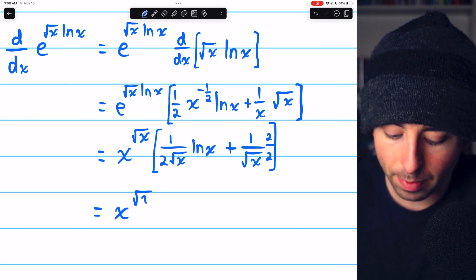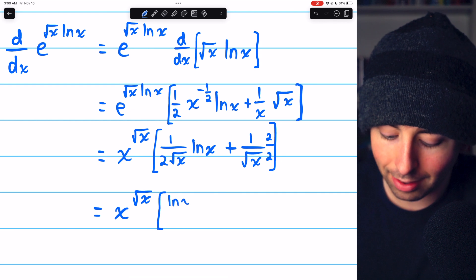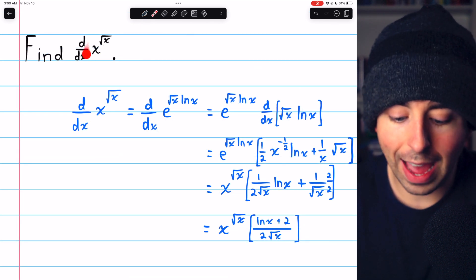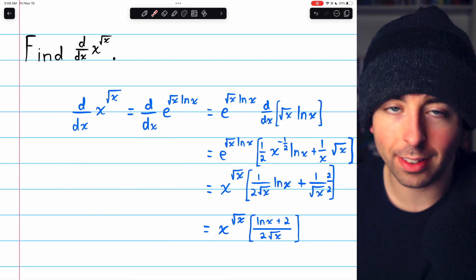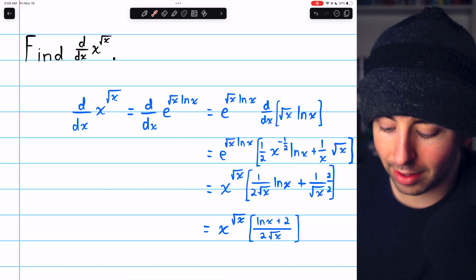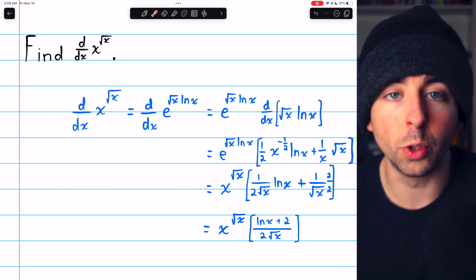And so our final answer is x to the root x multiplied by ln x plus two divided by two root x. And that's how we find the derivative of x to the root x. We just rewrote it as e to the root x ln x and then applied familiar derivative rules.